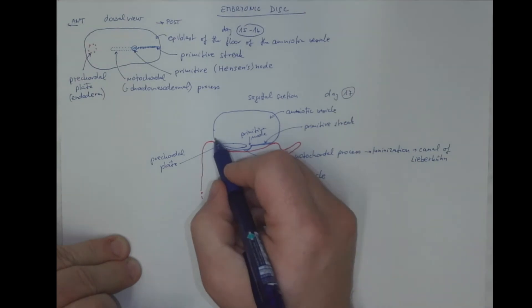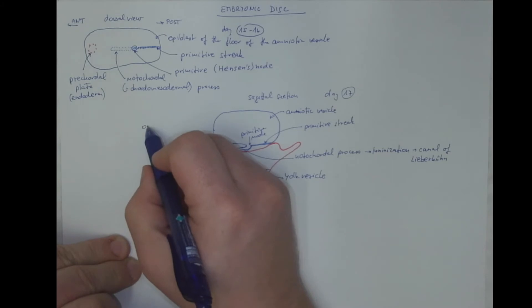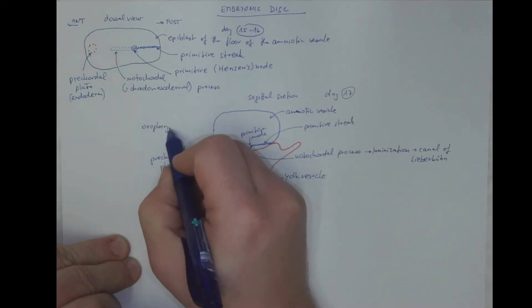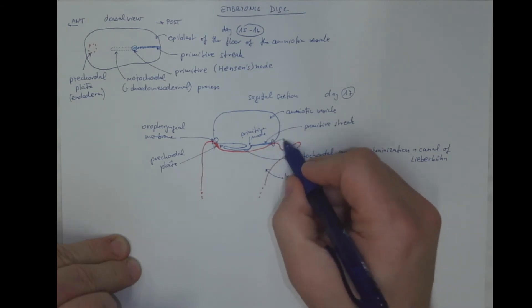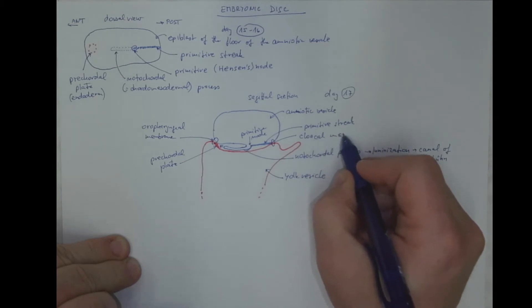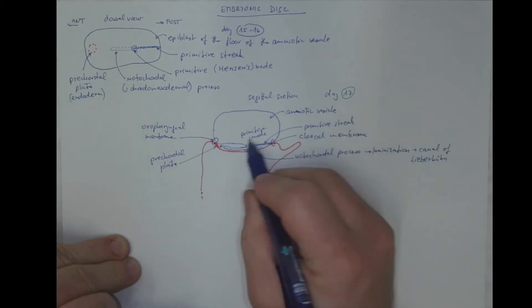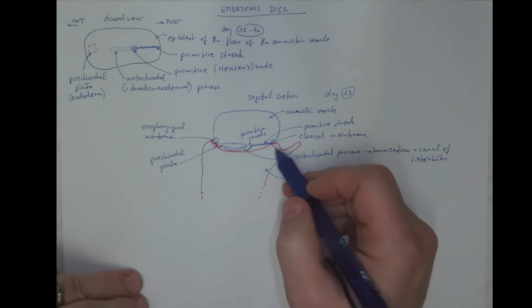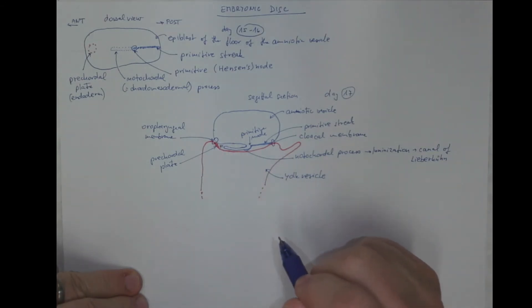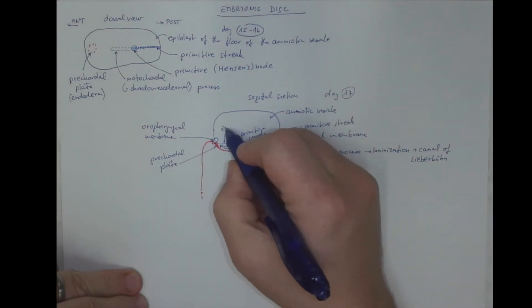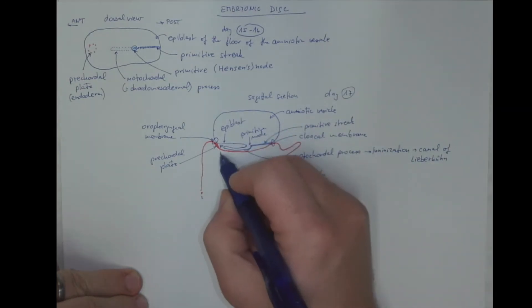Let's pay attention to these two regions where the yolk and amniotic vesicle are in very close contact. This is called the oropharyngeal membrane cranially and caudally a similar situation is called the cloacal membrane. We'll get back to these membranes when discussing development of the gastrointestinal system, and these membranes will break down. These are temporary membranes. So here is the epiblast and here is the hypoblast.